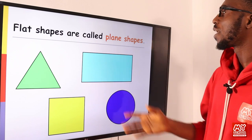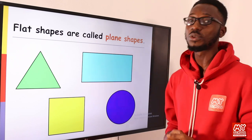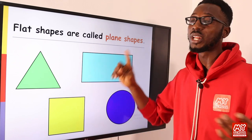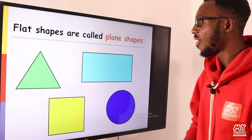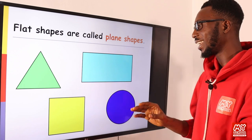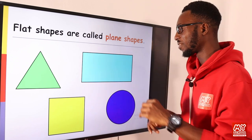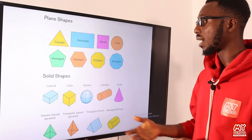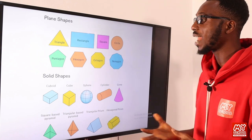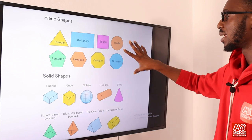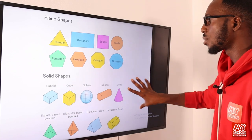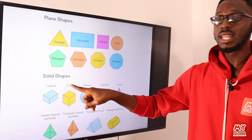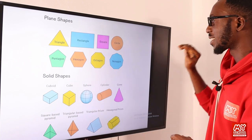Flat shapes are also called plane shapes. We also call them 2D shapes. This is a basic diagrammatic comparison between plane and solid shapes. You can see the examples of solid shapes here — in particular, the sphere is actually a solid shape.